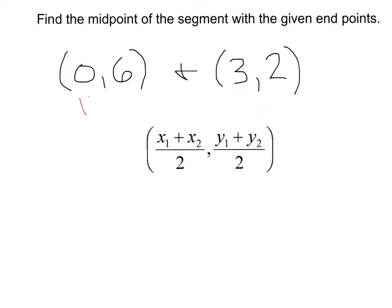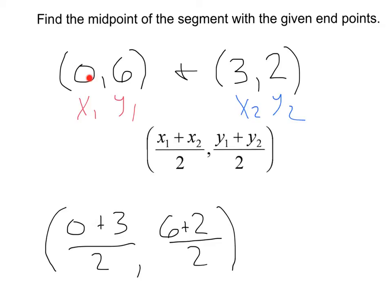Let's go ahead and let this be our x1 and our y1, and we could let our 3, 2 be our x2 and our y2. Now, we just need to plug it in. First, we just add our x's, 0 plus 3, divided by 2. Then, we add our y's, 6 plus 2, divided by 2.